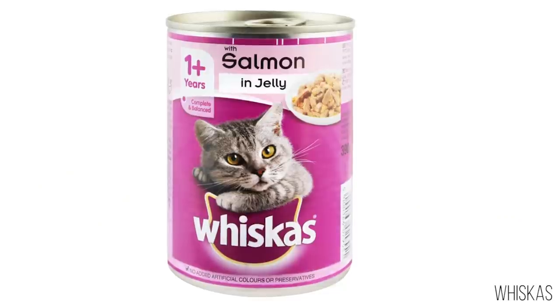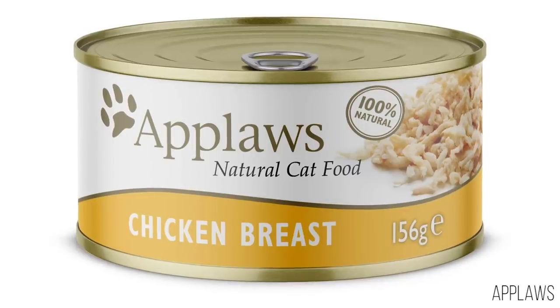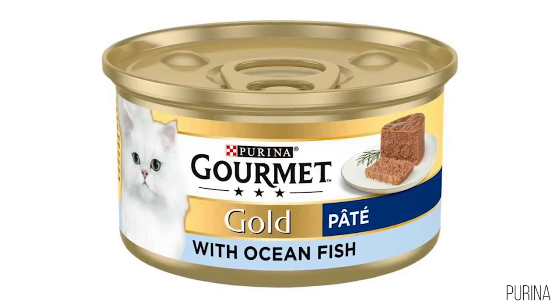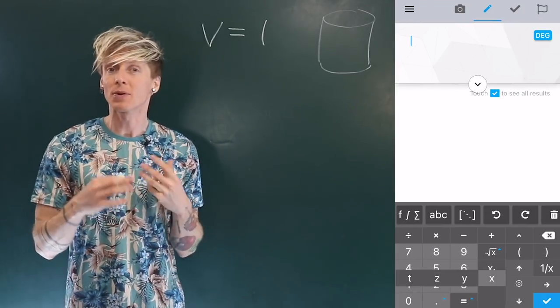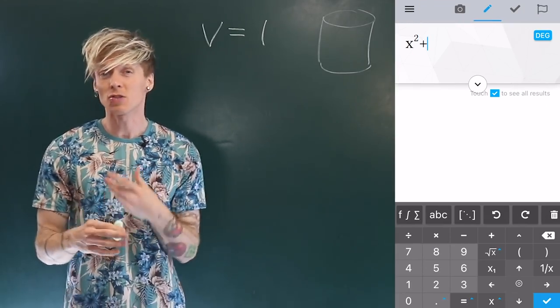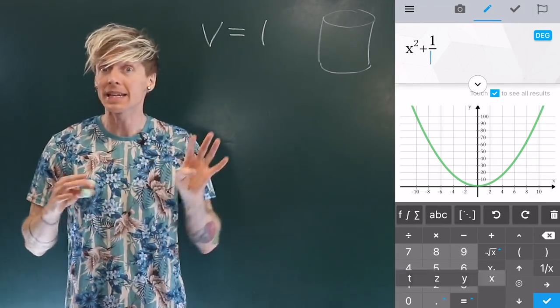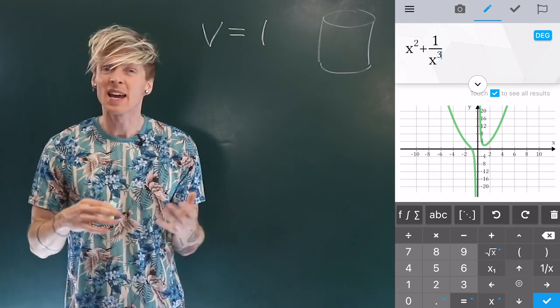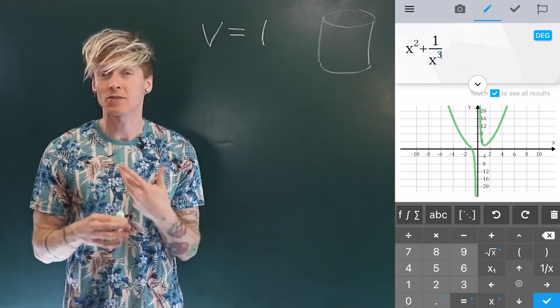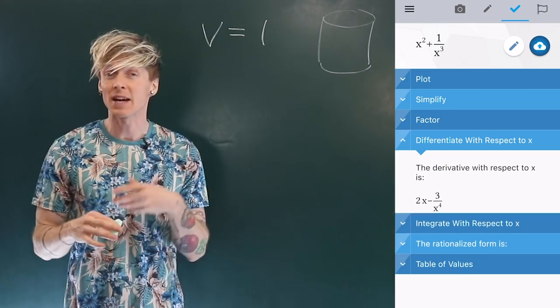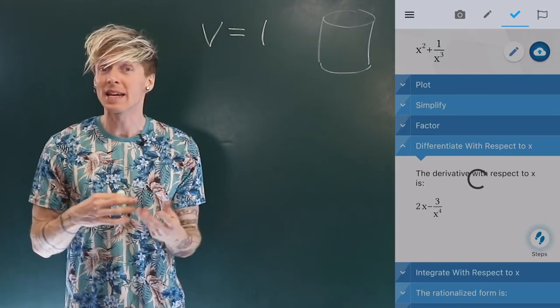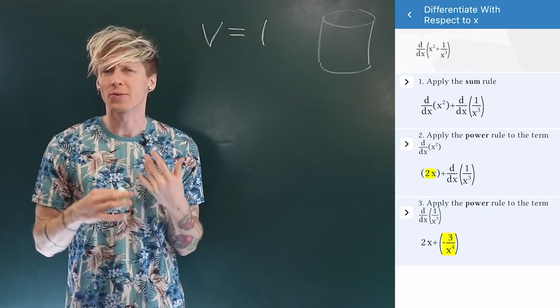The question is: what size tin should you use? Is it tall and thin, short and fat, or somewhere in between? To help me answer this question, I'm going to be using the Maple calculator app. It's a great piece of software, completely free, and it's really helpful for working out derivatives as well as plotting graphs. Download it for yourself now and use it along with me in the video as we work our way through the solution.